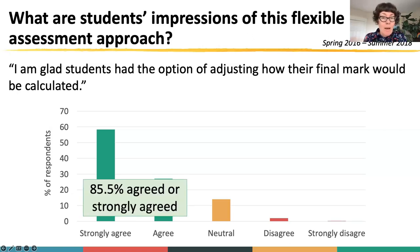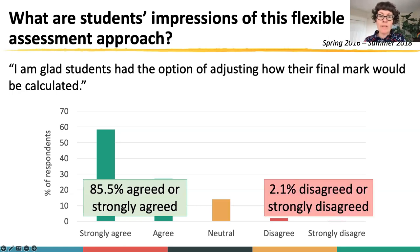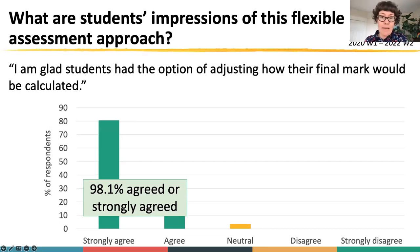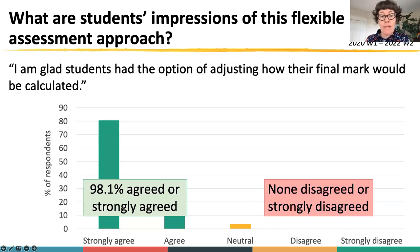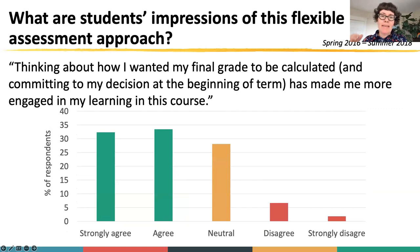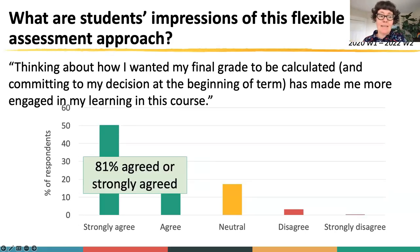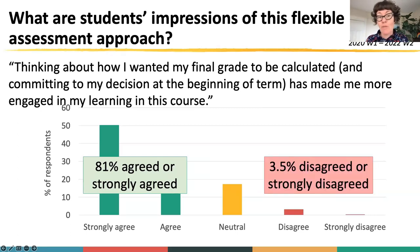Pre-pandemic, when everything was face-to-face, about 86% agreed or strongly agreed that they were glad they had the option of adjusting how their final mark would be calculated, and only about 2% disagreed. Since fall 2020, teaching remotely, that agreement has increased to 98% agreeing or strongly agreeing, with none who disagreed or strongly disagreed. From a more pedagogical perspective, on whether this made them more engaged in their learning: pre-pandemic about two-thirds strongly agreed or agreed, and about 8% felt it hadn't. Since the pandemic, about 81% feel it made a difference, and only about 3.5% feel it didn't.